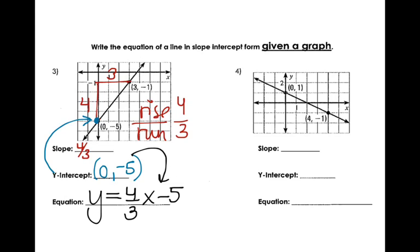Okay, I want you to try number 4 on your own. Hit pause right now and see how you do. Okay, so on number 4, you should have gotten y equals negative 1 half x plus 1. For our slope, our rise and our run, our rise is a negative 2, our run is a 4. That simplifies down to 1 half. So make sure you simplify that. My y-intercept is 0, 1. So that makes my equation y equals negative 1 half x plus 1.